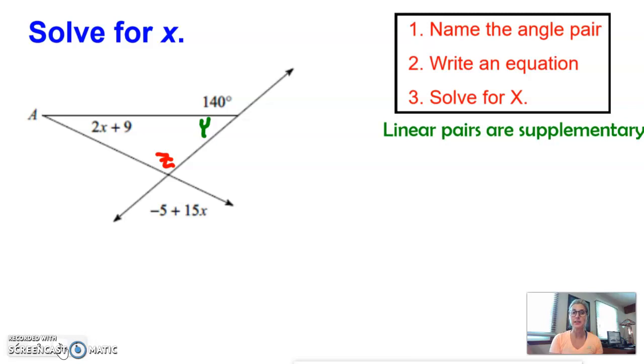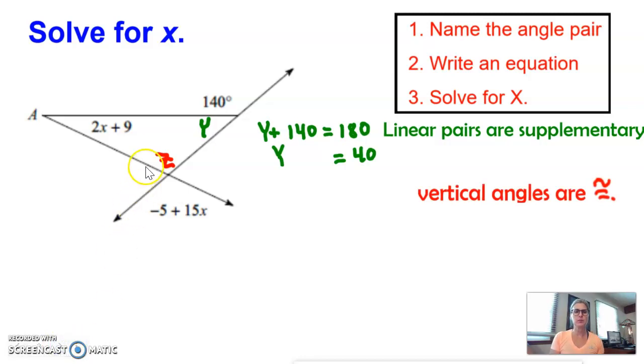Linear pairs are supplementary. You see that the Y and 140 make a linear pair. So that means Y plus 140 is 180. I subtract 140 from both sides of the equation. Y equals 40. Now, for the Z, that's a vertical angle set right here. So vertical angles we know are congruent. If vertical angles are congruent, I'm going to say that Z is the same as negative 5 plus 15X.